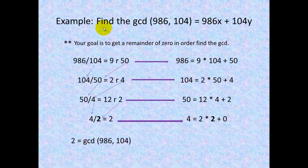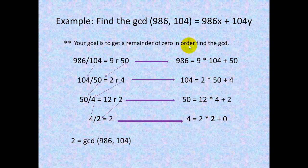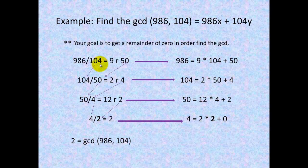In our example, we're going to find the GCD of 986 and 104. To find the GCD, we get a remainder of zero. We take our smaller number as the divisor and our larger number as the dividend. So we have 986 divided by 104 equals 9 with a remainder of 50. We rewrite that equation as 986 equals 9 times 104 plus 50.